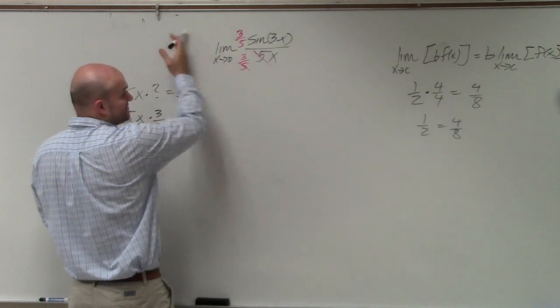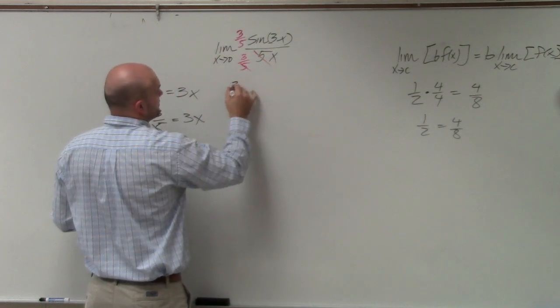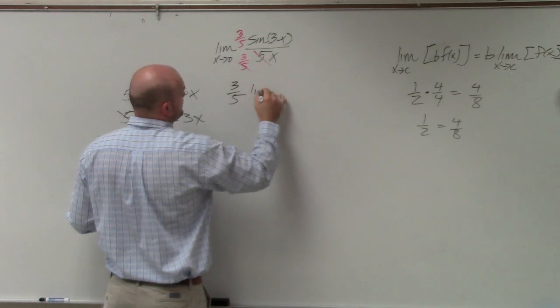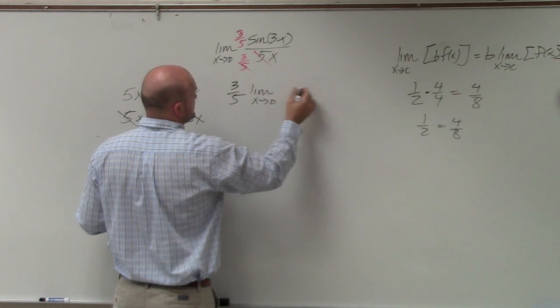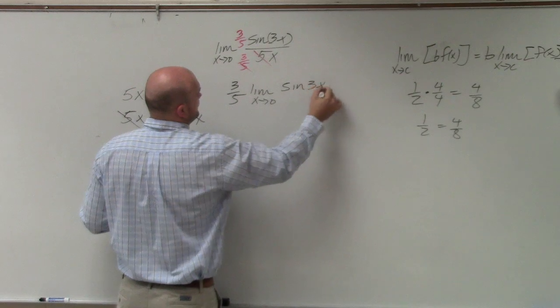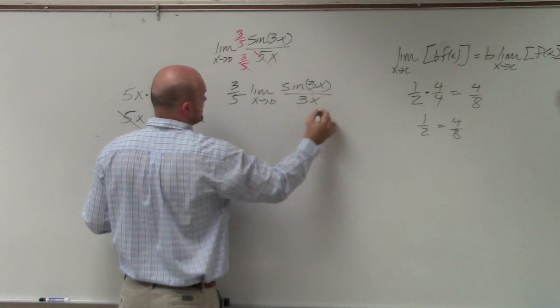Well, I can actually take this 3 fifths and put it in the front. So I have 3 fifths times the limit as x approaches 0 of sine of 3x over 3x.